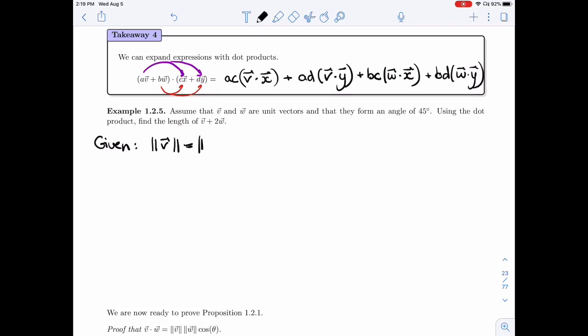So length of V and length of W, both one. And that the angle that they form is 45 degrees.